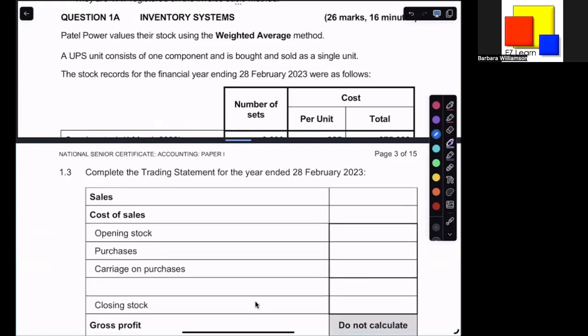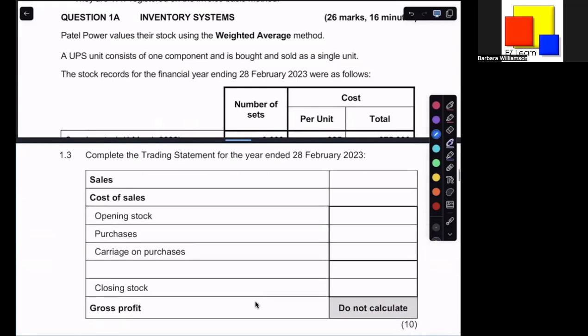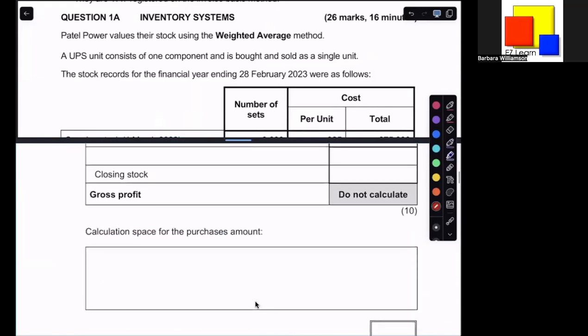We then need to complete the trading statement for the year ended 28th of February. The trading statement is simply the top part of the statement of income. In other words, we don't need to show the expenses below. We don't even actually need to calculate gross profit in this case, because they've asked us not to. So we're just going to show our sales and cost of sales calculations, and they've given us space to work out the purchases.